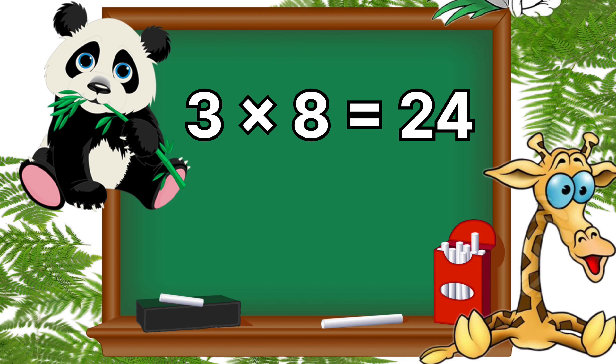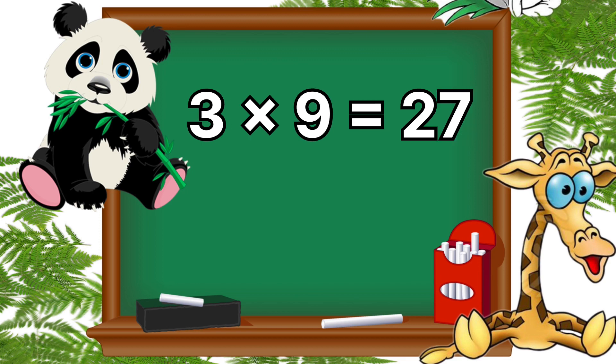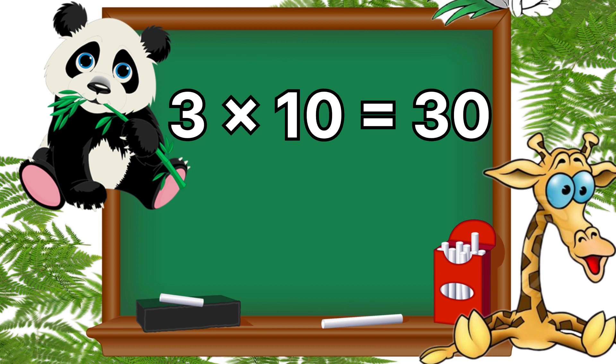Three nines are twenty-seven, three tens are thirty. Bye bye!